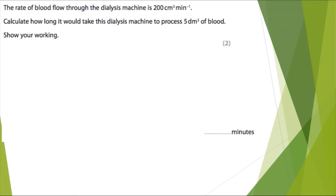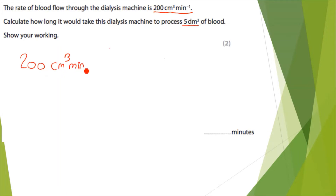So on to the first example. In this example, it says that the rate of blood flow through a dialysis machine is 200 centimetres cubed per minute. Calculate how long it would take the dialysis machine to process 5 decimetres cubed of blood. The method I use is looking at the units. So in this example, we have 200 centimetres cubed per minute, and we have 5 decimetres cubed, and we've been asked to provide our answer in minutes.